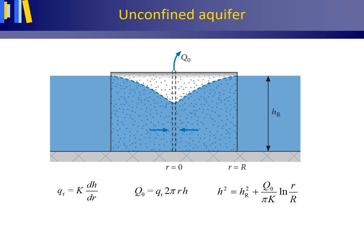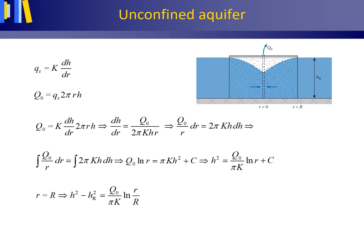This slide summarizes the derivation found in section M7 of the book. Again starting with the Darcy equation and the continuity equation, we insert Darcy into continuity, then rewrite, moving all terms with r to the left and all terms with H to the right. After integrating and inserting the boundary condition r equals large R, we obtain the equation for the potentiometric drawdown surface in an unconfined aquifer.